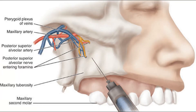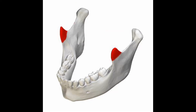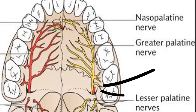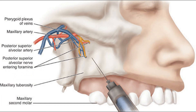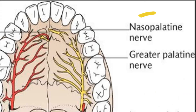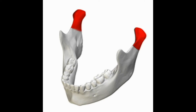Starting with the maxillary block, you can give it in the pterygopalatine fossa, in the coronoid process of the mandible, or in the greater palatine canal. The branches of the maxillary include the superior alveolar nerve — so you can have the posterior, middle, and anterior superior alveolar nerves. You can also block the infraorbital nerve and the nasopalatine nerves.